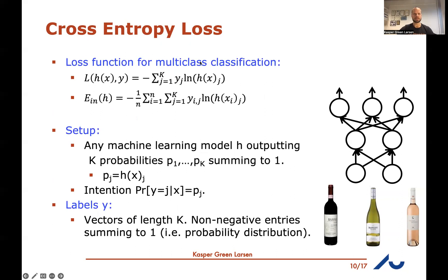To summarize: cross entropy loss is used for multi-class classification. The pointwise loss sums over the j possible output classes, multiplying the j-th label entry by the log of the j-th model output. The ensemble error is the average over all training examples of this pointwise loss. It's useful for any model outputting K probabilities summing to one, where the j-th output should equal the probability that the label is class j.